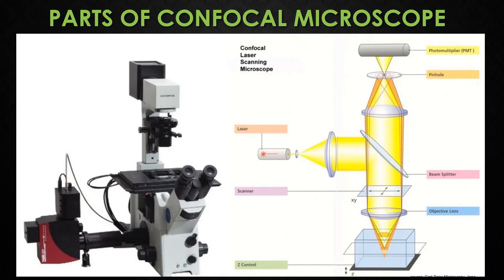Next are the parts of the confocal microscope. The confocal microscope has several parts: objective lens, laser light source, beam splitter, detectors, stage, z-control, eyepieces, pinhole, and photomultiplier tube.